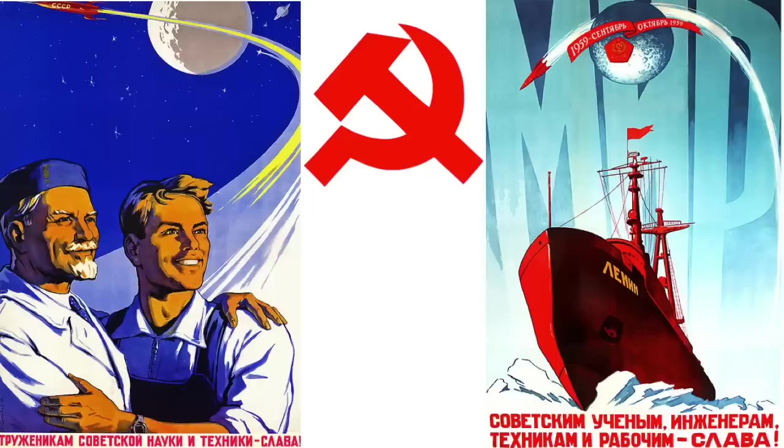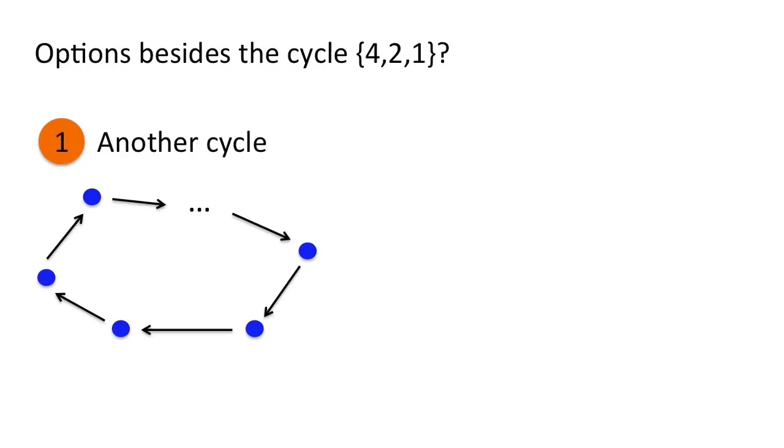But getting back to the problem, what could happen if a starting number doesn't reach the cycle 4, 2, 1? One possibility is that it approaches some other cycle. Advanced theory shows that any cycle besides 4, 2, 1 must have at least 10 billion numbers.